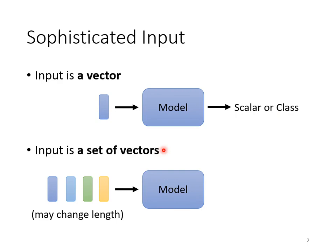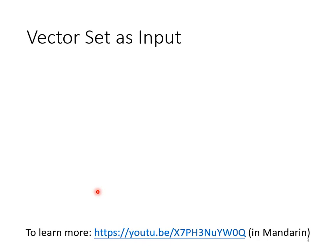When we talked about image recognition earlier, I also emphasized that the size of the input image is fixed. Now supposing that our input is changeable — every time the number of input sequences to our model is different, and the length of input sequences is also different — what should we do? Is there any example where the input is a sequence with changeable length? The first example is word processing. Suppose the input of the network is a sentence; the length of each sentence is different, and the number of words in each sentence is different. If we describe every word in a sentence as a vector, the input of our model will be a vector set, and the size of this vector set is different every time.